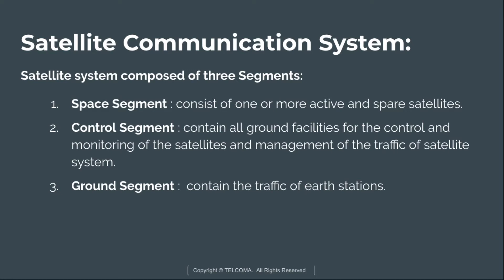The space segment consists of one or more active and spare satellites organized into a constellation. The control segment contains all ground facilities for the control and monitoring of satellites and management of satellite system traffic. It is also known as TTC — tracking, telemetry, and command station.